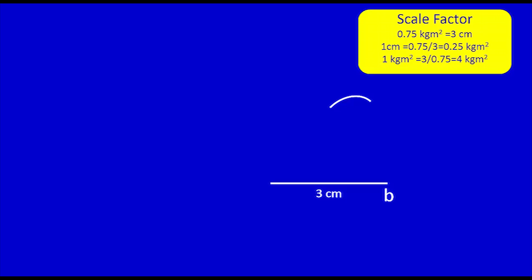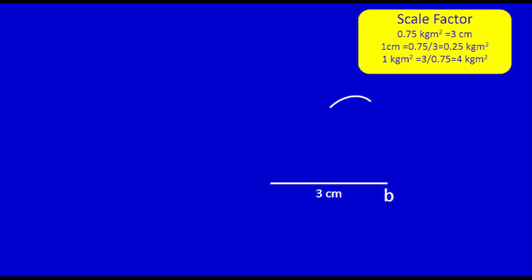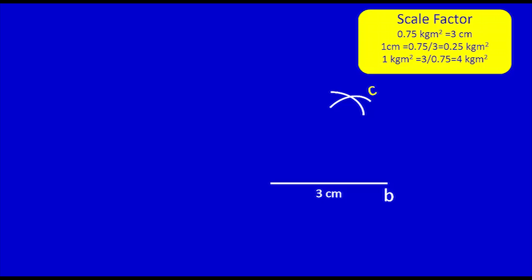Again from the table, C equals 1.2. I draw another arc of radius 1.2 kg·m², which equals 4.8 cm using the scale factor of 4, from point O. Now both arcs intersect at point C. I then connect points O to C and B to C. This completes the couple polygon.